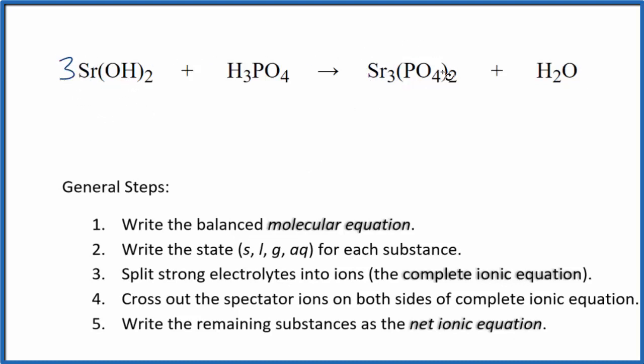Now I can also see that I have two phosphate ions here and just one here. So I'm going to put a two in front of the H3PO4. That'll give me two phosphates to balance these two phosphates.